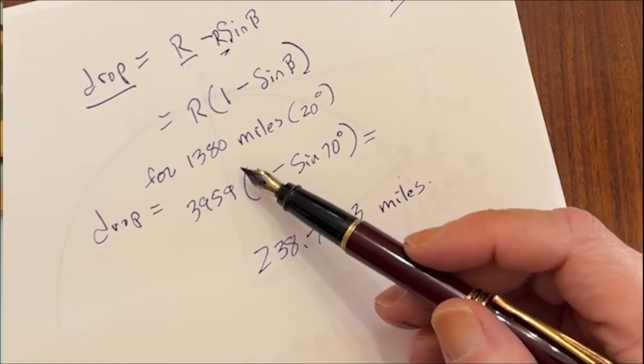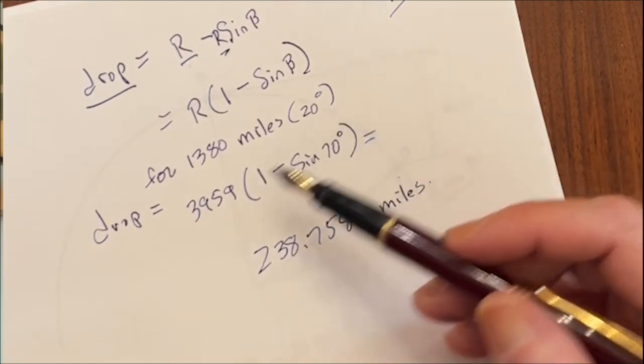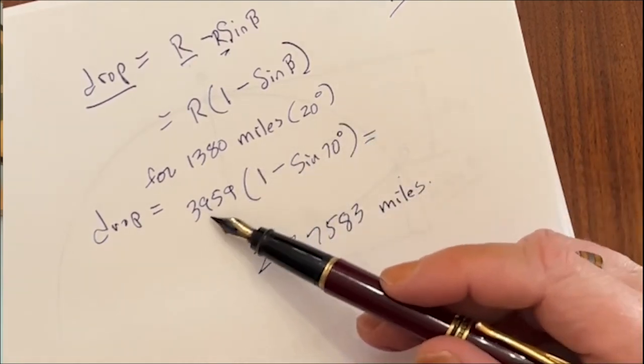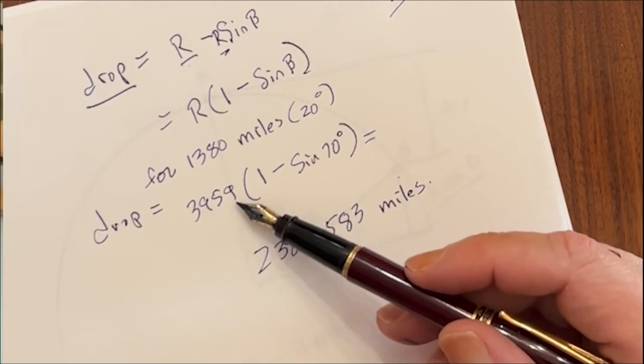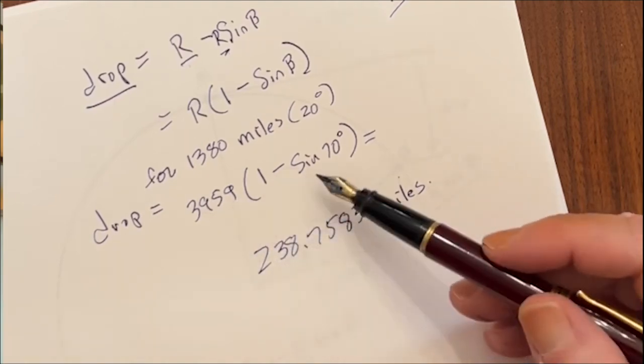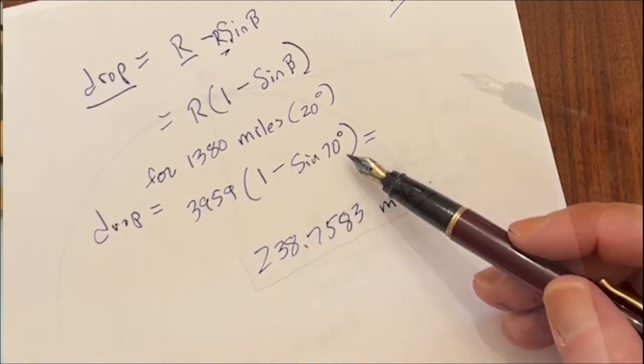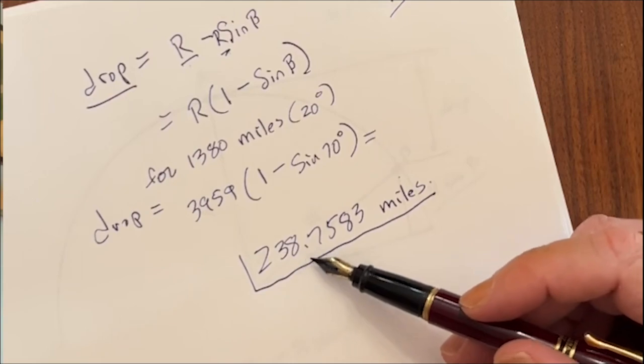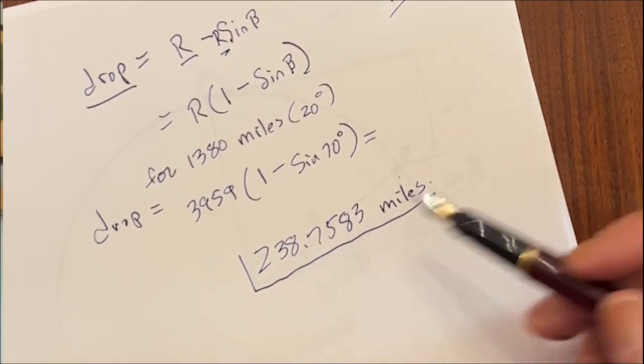Now, for 1380 miles, or 20 degrees, our drop is going to be the radius of Earth, 3959 miles, times 1 minus the sine of 70 degrees. And that works out to 238.7583 miles.